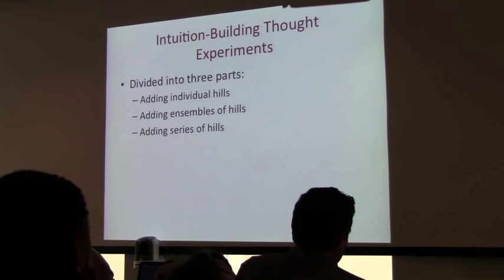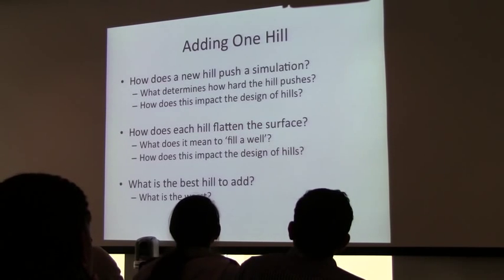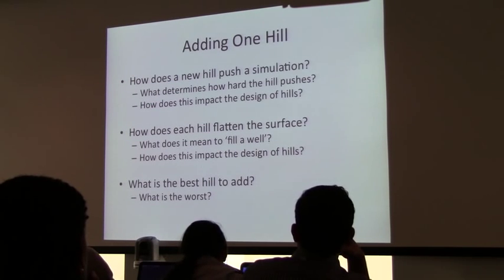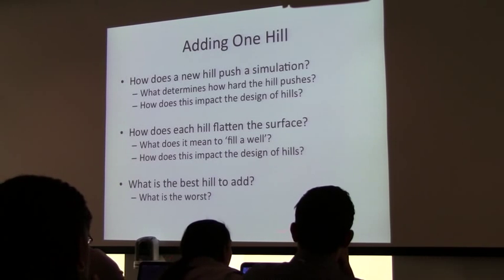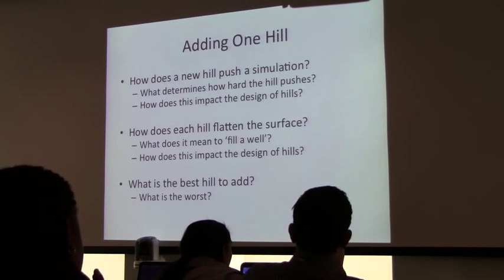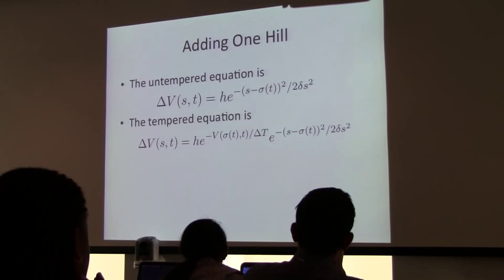For adding one hill, I'll answer: how does a hill push a simulation — how hard does it push and how does it affect design? How does the hill flatten the surface? What does it need to fill a well? And — a cheeky question — what is the best hill to add, if you knew in advance? What could you get wrong? The equation: adding a Gaussian with height h and width delta-S at the state we're sampling, sigma(t). In well-tempered metadynamics, we use a slightly lower height based on the number of times a point has been visited previously.